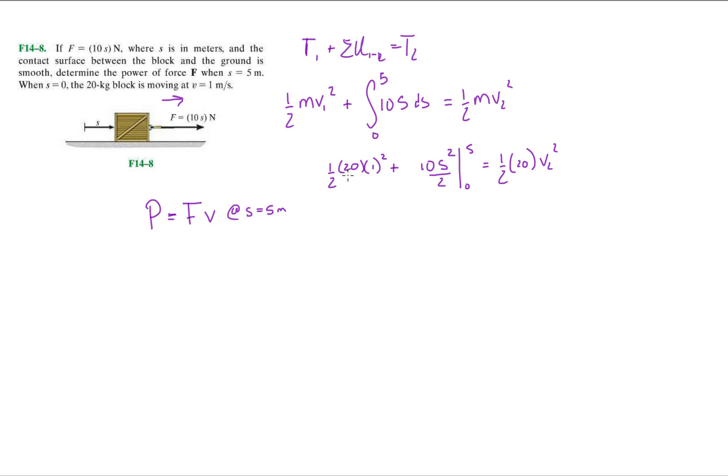Let's integrate this real quick. It's gonna be 10 s squared divided by 2 evaluated from 0 to 5 equals one-half 20 v2 squared. All right, what does that give us? This is just 1 times 10, so it's 10 plus 5 times 25.